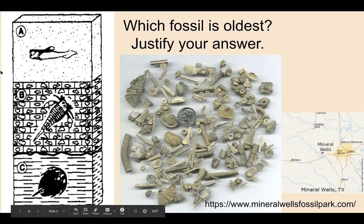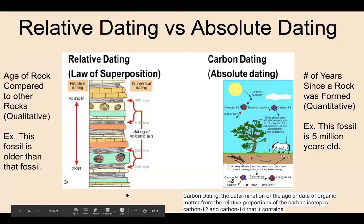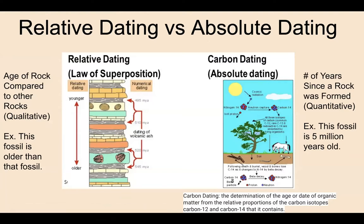Keep that answer in mind as we go through the PowerPoint. We're going to be talking about relative dating. When we talk about relative dating, we're talking about the age of a rock compared to other rocks — it's a qualitative measure. For example, 'this fossil is older than that fossil.' Absolute dating, by contrast, gives an actual number of years since that rock was formed — that's quantitative data. For example, 'this fossil is five million years old.'